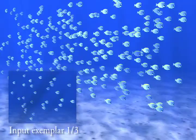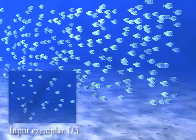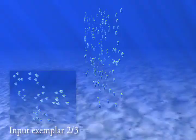In this example, the flock of fish is entirely animated by our synthesis method from the small animated exemplar shown at the bottom with a homogeneous distribution. The coarse output domain is simply a box.